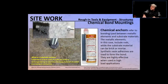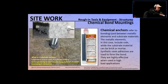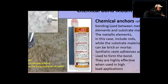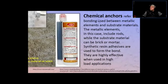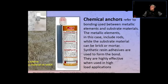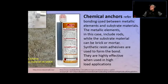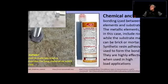In some situations you'll use something called chemical bond mountings — also called chemical anchors. Chemical anchors refer to bonding used between metallic elements and the substrate materials. The substrate is basically the area the chemical is going to work on — like if you glue two sticks together, those sticks are the substrate.